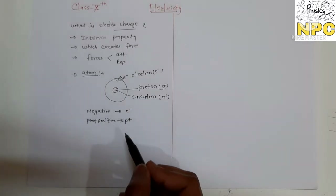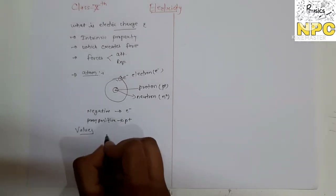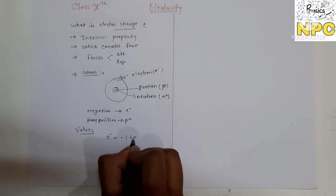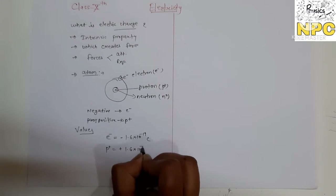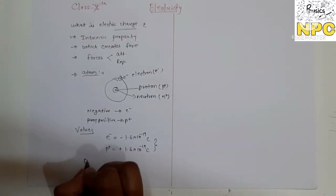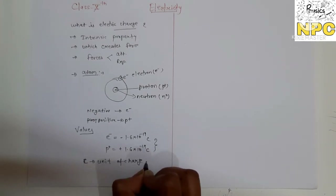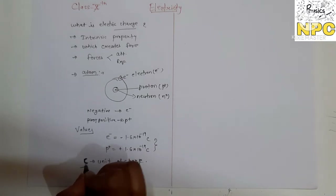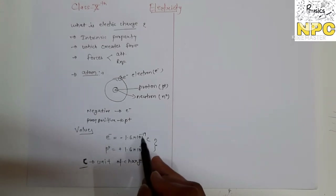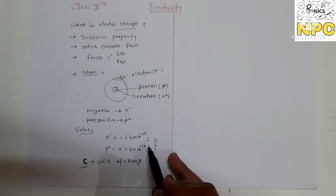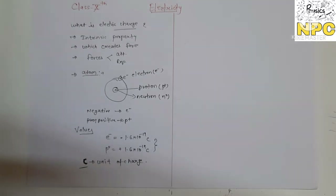These two charges have the same magnitude but different nature. The value of an electron is −1.6×10⁻¹⁹ coulomb, and for a proton it is +1.6×10⁻¹⁹ coulomb. Coulomb is the unit of electric charge, denoted by capital C. The magnitude is the same — 1.6×10⁻¹⁹ coulomb — but the sign is different: negative for electron and positive for proton.